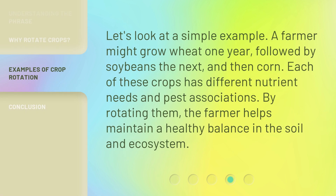Let's look at a simple example. A farmer might grow wheat one year, followed by soybeans the next, and then corn. Each of these crops has different nutrient needs and pest associations. By rotating them, the farmer helps maintain a healthy balance in the soil and ecosystem.